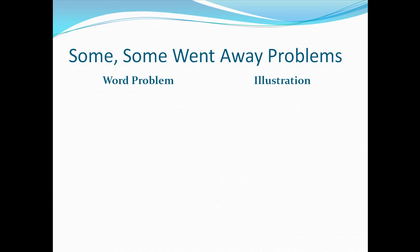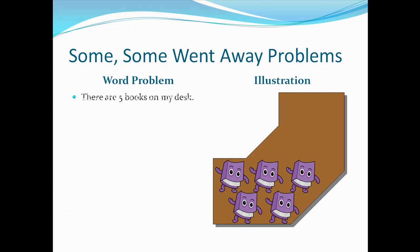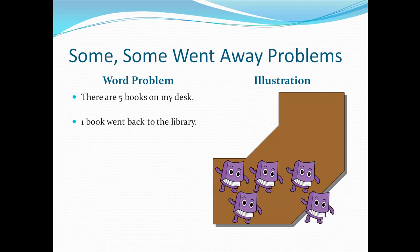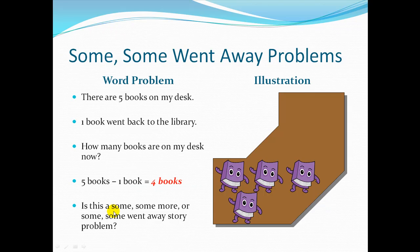Let's try another one. This time we're dealing with books on my desk. There are five books on my desk. One book went to the library because it was overdue — there it goes. How many books are left on my desk now? I can count one, two, three, four books. Our number sentence would say five books minus one book equals four books left. Is it a some, some more, or some went away story problem? It has to be some, some went away, because there were some there and this one went away.